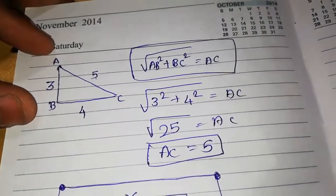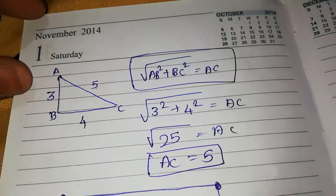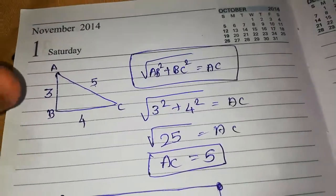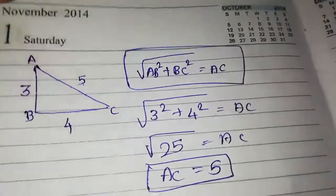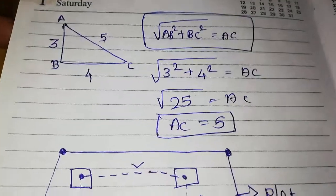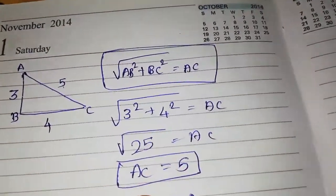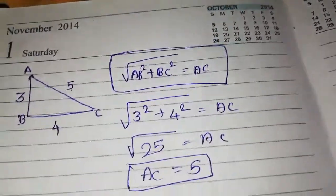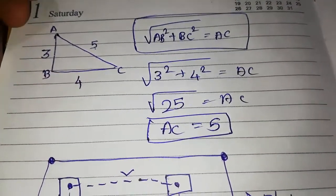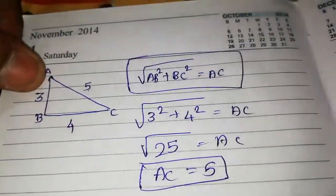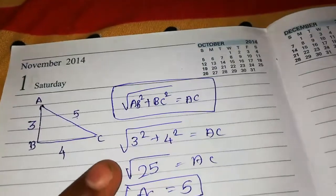We are going to mark a column. We are going to take a small example using Pythagoras. We are going to take a small triangle A, B, C.